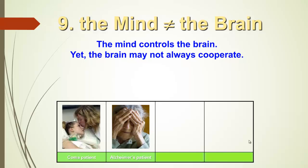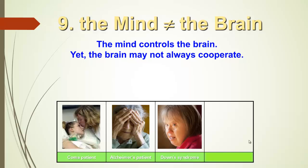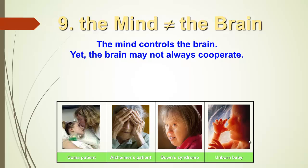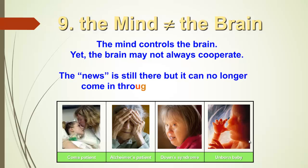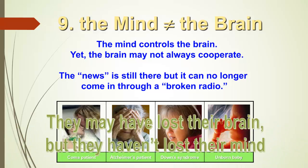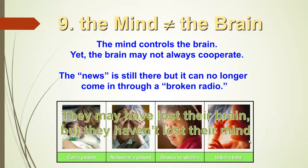An Alzheimer's patient, the brain is not cooperating too well anymore. A person with Down syndrome may not have the perfect brain. An unborn baby may not have a brain that is fully developed yet. But the news is still there, though it can no longer come in through a broken radio. These may have lost their brain, but they haven't lost their mind.